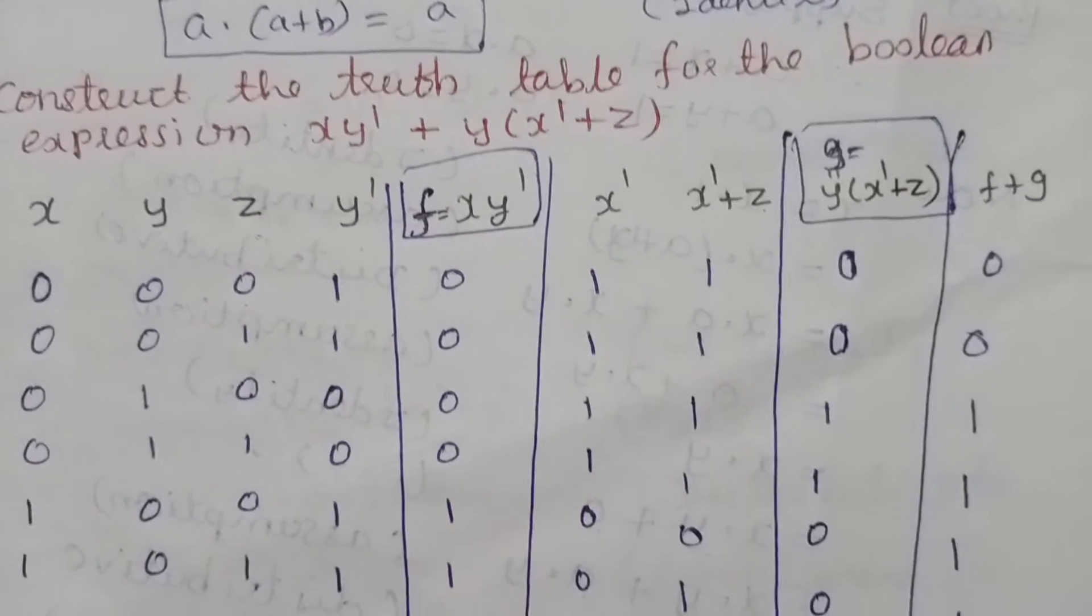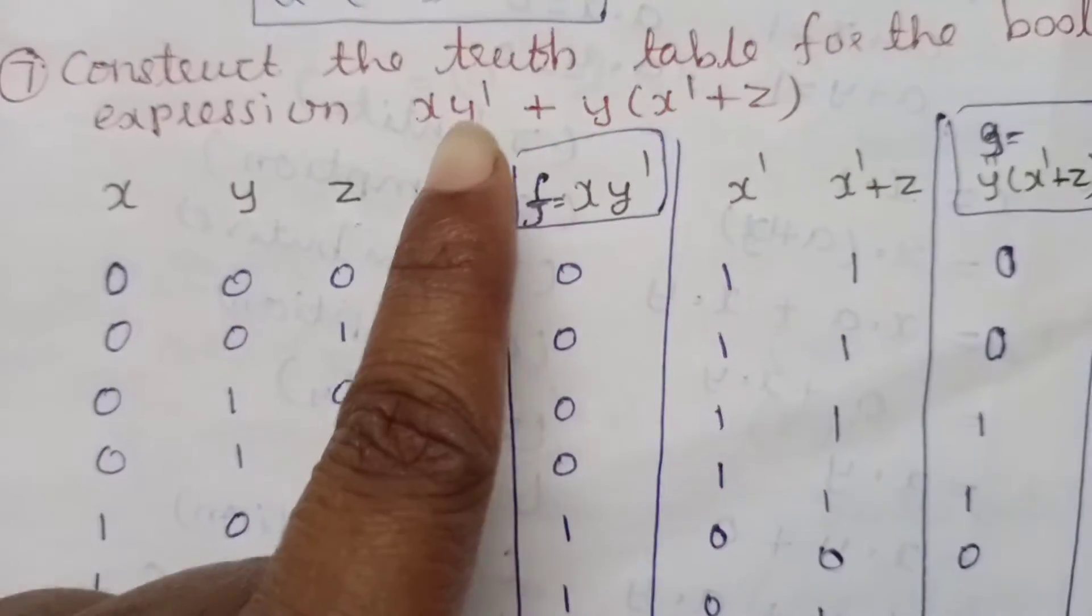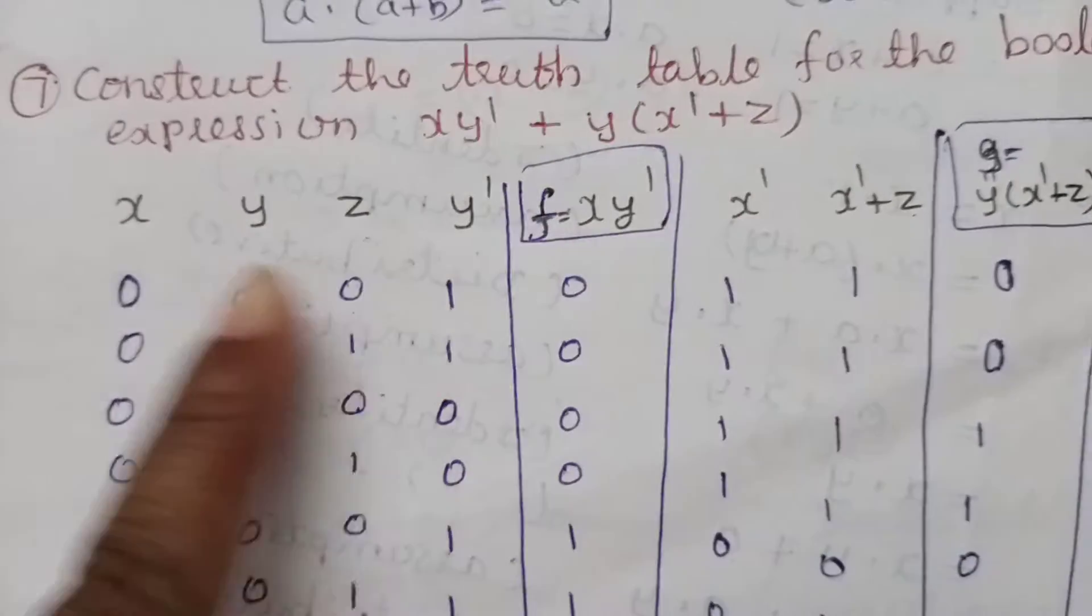Now, construct the truth table for the Boolean expression xy' + y(x' + z). x, y, z is 3 variables.